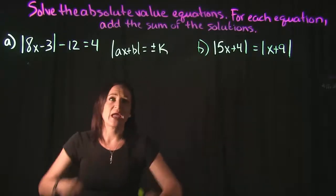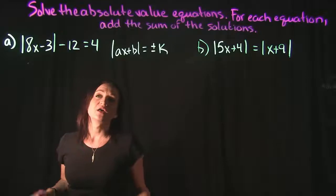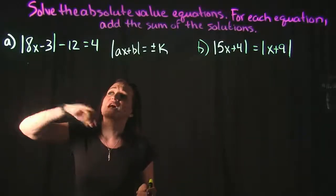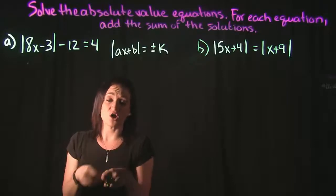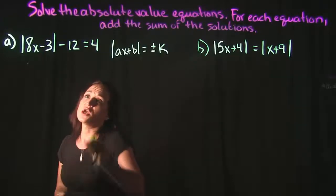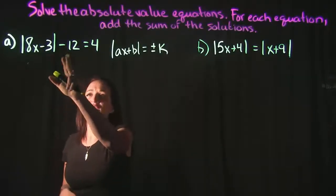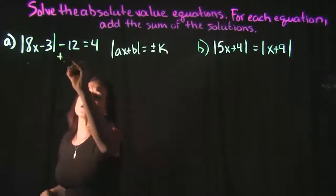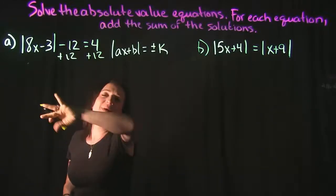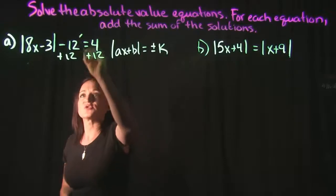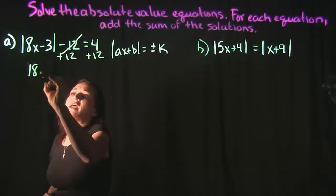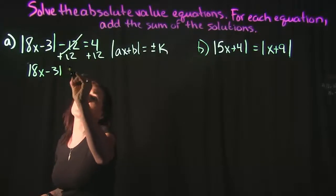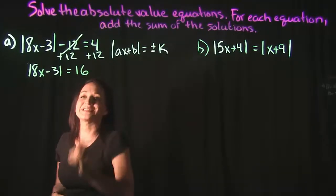For example A, first we need to get the absolute value completely by itself on one side of the equation. The only thing going on is we have this minus 12, so I'm going to add 12 to both sides so that it cancels on the left. That leaves me with the absolute value of 8x minus 3 is equal to 16.